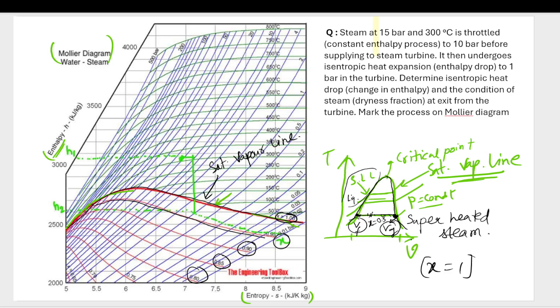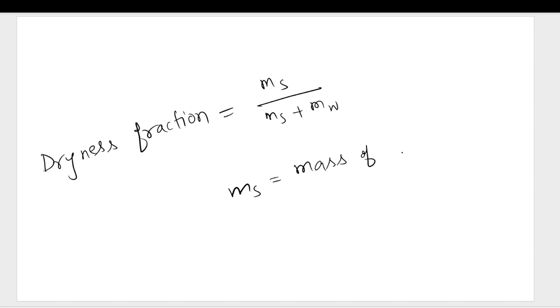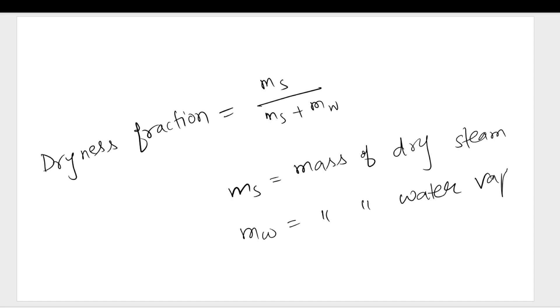The dryness fraction is basically a ratio: x = ms / (ms + mw), where ms is the mass of dry steam and mw is the mass of water vapor. This is also denoted by x and determines the quality of the steam.